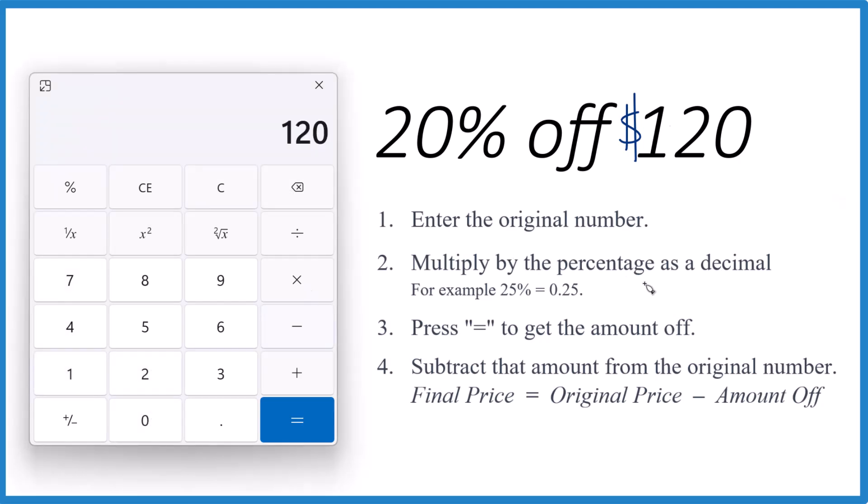Then we multiply it by the percentage as a decimal. So 20% becomes 0.20 or you could just call it 0.2. So times 0.2.